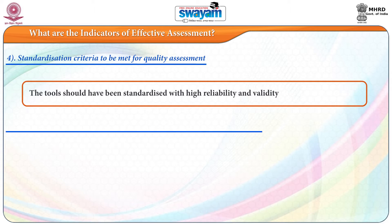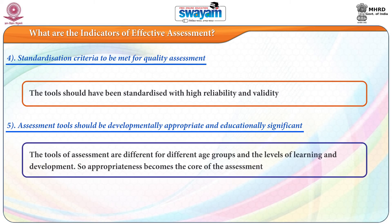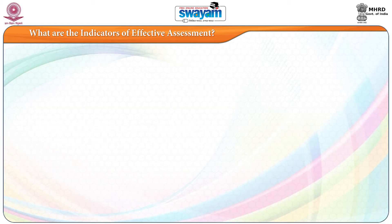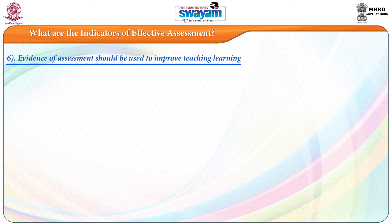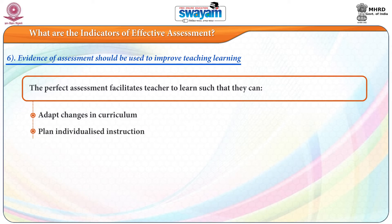The fifth indicator is that the assessment tool should be developmentally appropriate and educationally significant. Tools of assessment differ for different age groups, and levels of learning and development also differ, so appropriateness becomes the core of assessment. The sixth indicator is that evidence of assessment should be used to improve teaching and learning — effective assessment helps teachers adapt curriculum or plan individualized instruction.